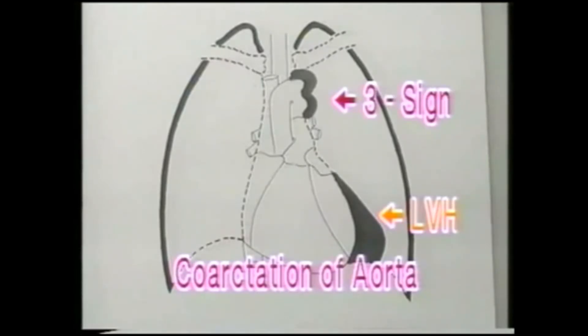The heart shows left ventricular hypertrophy, seen as cardiomegaly with the apex displaced downwards and outwards.